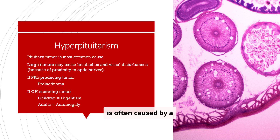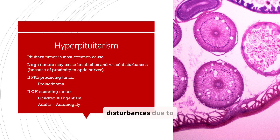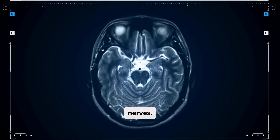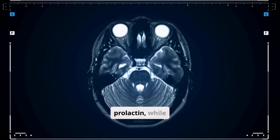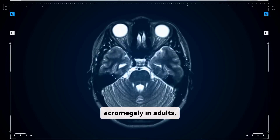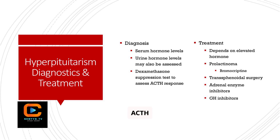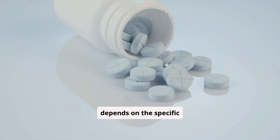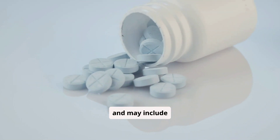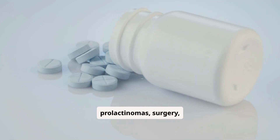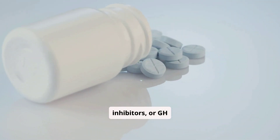Hyperpituitarism is often caused by a pituitary tumor. Large tumors can cause headaches and visual disturbances due to their proximity to the optic nerves. Prolactinomas produce prolactin, while GH-secreting tumors cause gigantism in children and acromegaly in adults. Diagnosing hyperpituitarism involves measuring serum and urine hormone levels. The dexamethasone suppression test assesses ACTH response. Treatment may include bromocryptine for prolactinomas, surgery, adrenal enzyme inhibitors, or GH inhibitors.